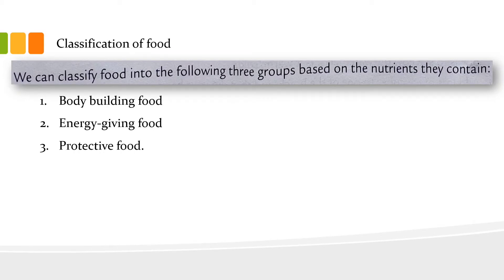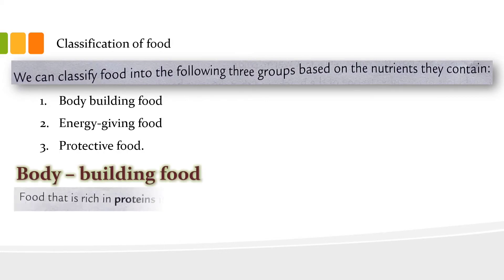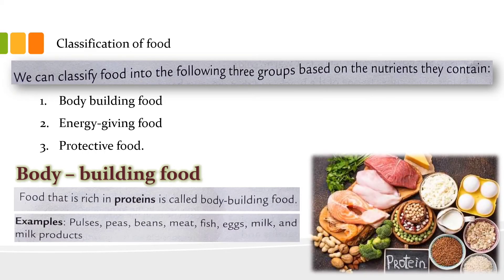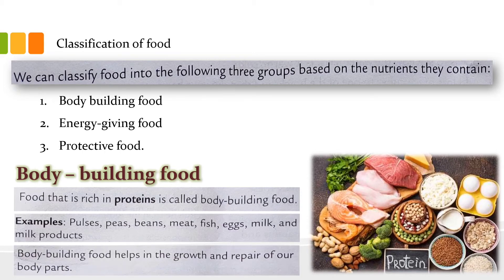Foods that are rich in protein are called bodybuilding foods. Examples are pulse, pea, bean, meat, fish, egg, milk, and milk products. These bodybuilding foods help in the growth and repair of our body parts.